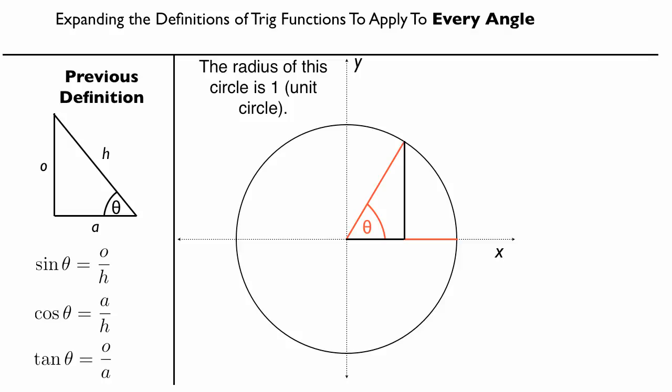This is going to motivate our definition of what the sine of this angle is. For every extension of that line, we can draw lines to make a triangle. We call that opposite side O and the adjacent side A. The hypotenuse equals 1 because this is the unit circle. So sine of that angle equals O over 1, which is just O, and cosine of that angle equals A over 1, which is just A. In other words, we can relabel these sides as cosine theta and sine theta.